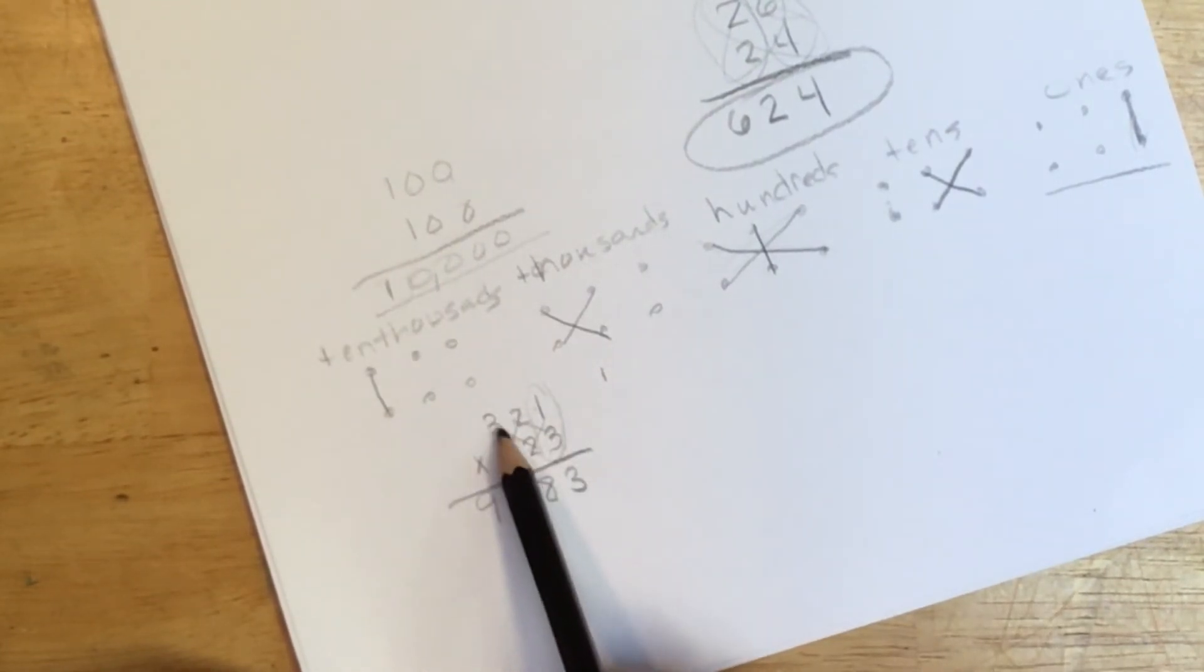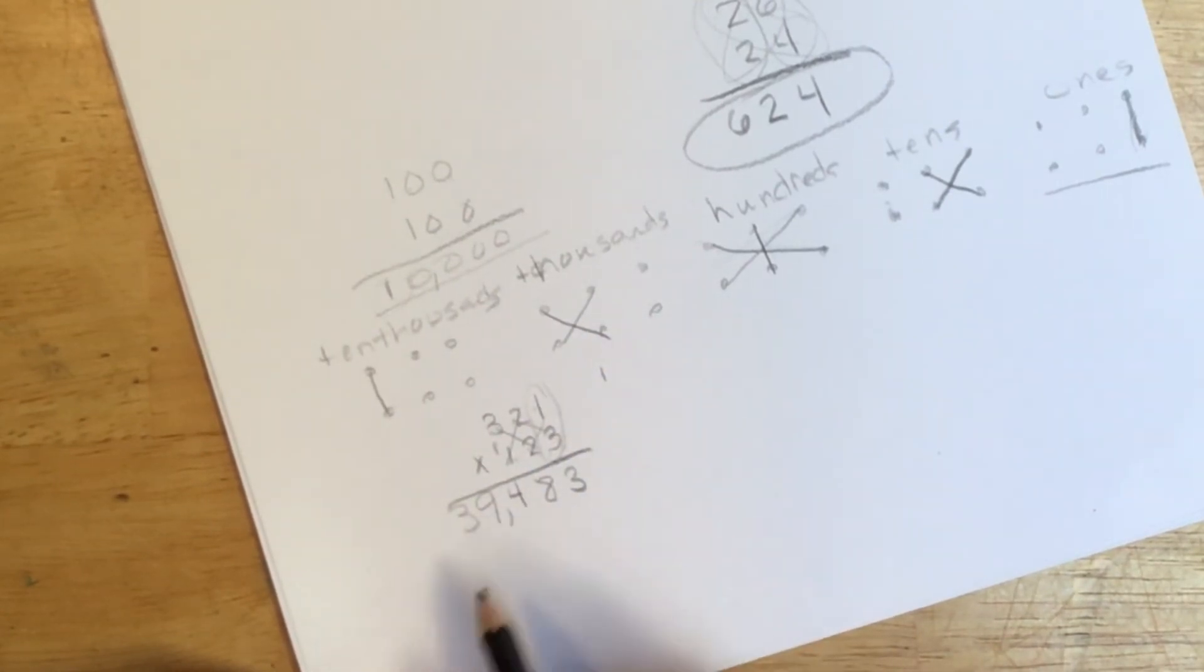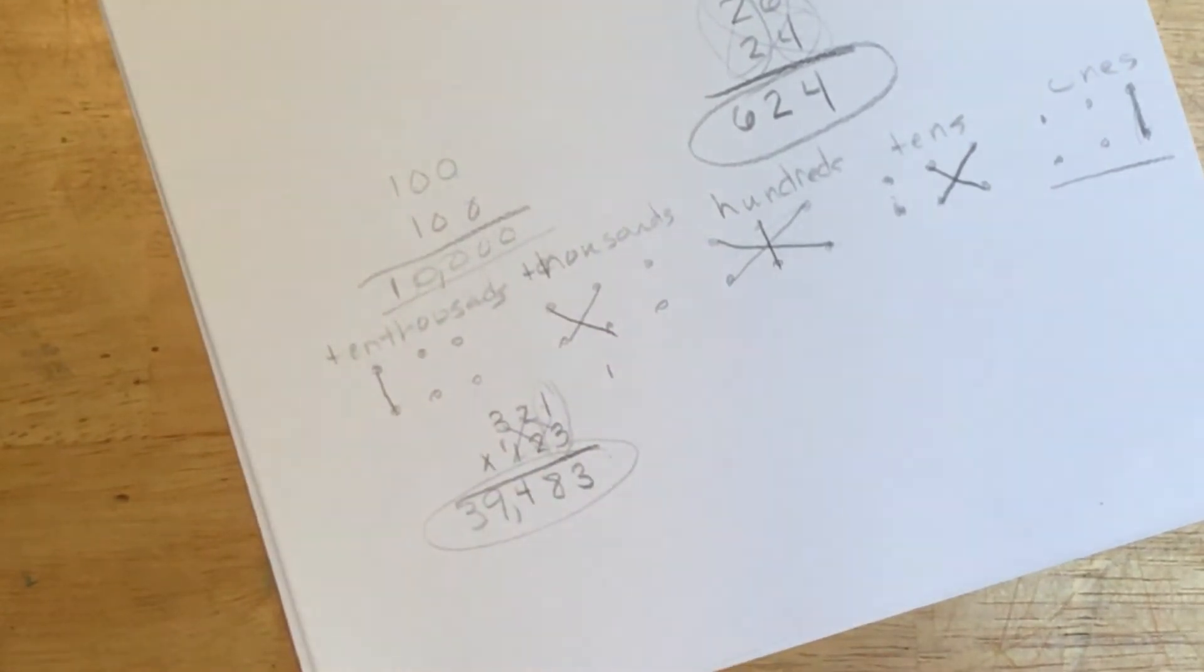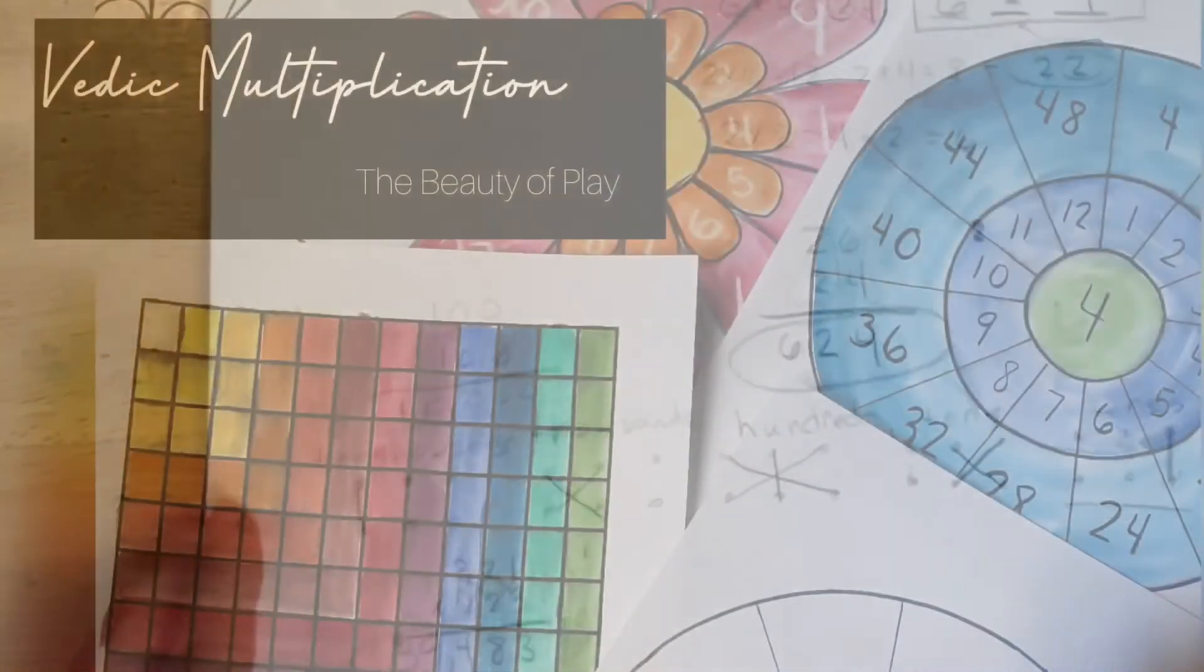And to get our ten thousands, we are multiplying these two here, which is three. And if I did that correctly, it's thirty-nine thousand four hundred eighty-three. And that is how you do the Vedic method for multiplication.